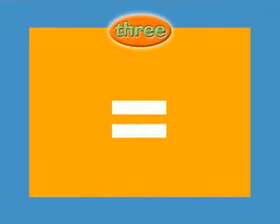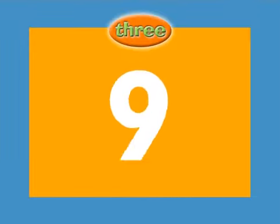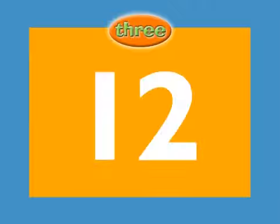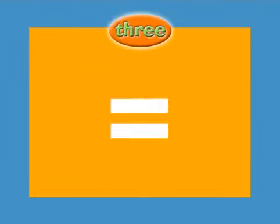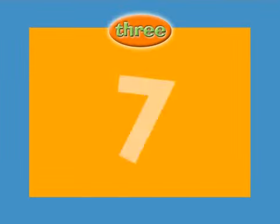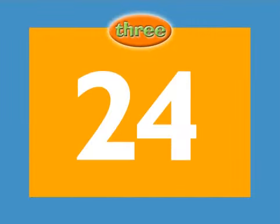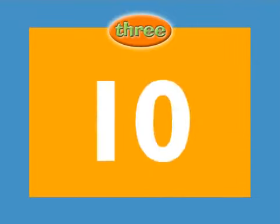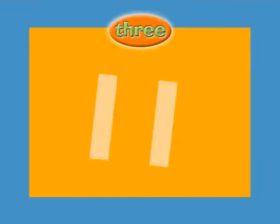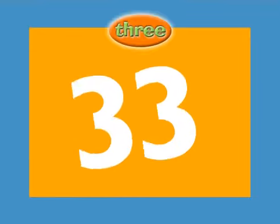1 times 3 equals 3. 2 times 3 equals 6. 3 times 3 equals 9. 4 times 3 equals 12. 5 times 3 equals 15. 6 times 3 equals 18. 7 times 3 equals 21. 8 times 3 equals 24. 9 times 3 equals 27. 10 times 3 equals 30. 11 times 3 equals 33. 12 times 3 equals 36.